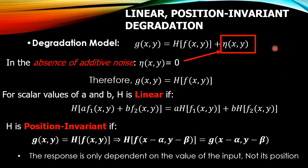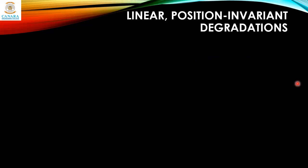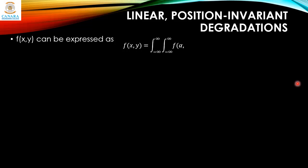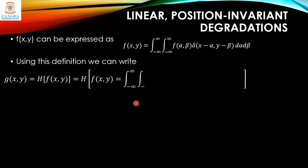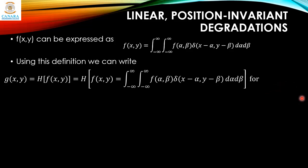f(x,y) can be expressed as a double integral from −∞ to +∞ of f(α,β) · δ(x−α, y−β) dα dβ. Using this definition we can write g(x,y) = h[f(x,y)], and substituting the integral expression for f(x,y) inside h, with additive noise set to zero.